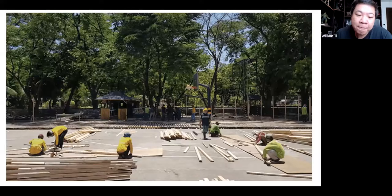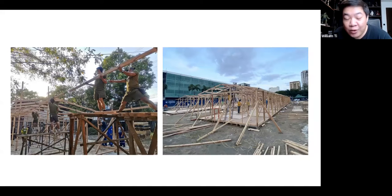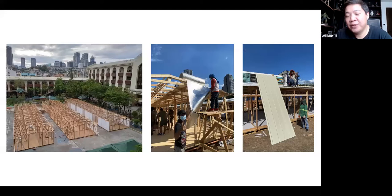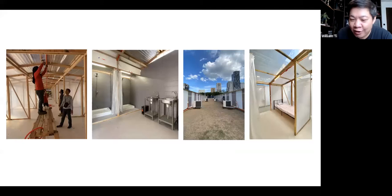We start by putting in shipping pallets as a platform — this is where we run our pipes through, your water and electrical components. Then you put up the walls, the timber frames. Once the timber frames are up, you start putting in the skin and the roof. In about three to three-and-a-half days, you have your structure done. Then you start installing the flooring and putting in the utilities. In five days, you have your facility.